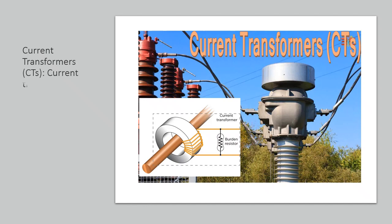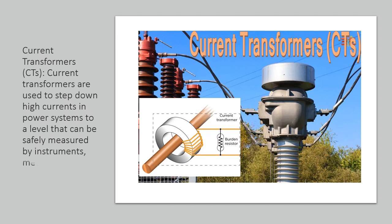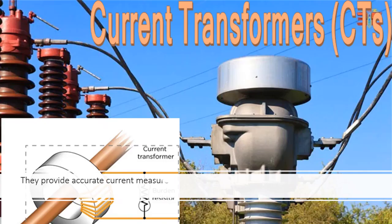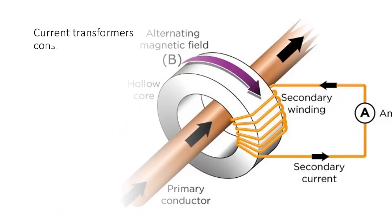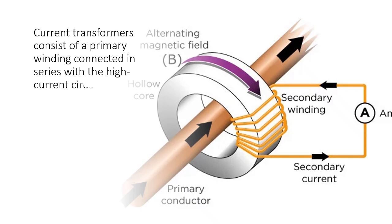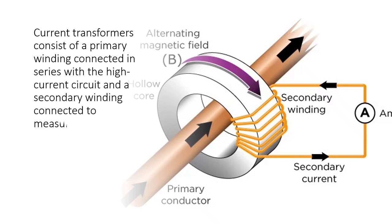Current transformers (CTs) are used to step down high currents in power systems to a level that can be safely measured by instruments, meters, or relays. They provide accurate current measurements for various purposes, such as monitoring power consumption, detecting faults, and protecting equipment. Current transformers consist of a primary winding connected in series with the high current circuit and a secondary winding connected to measurement or protection devices.